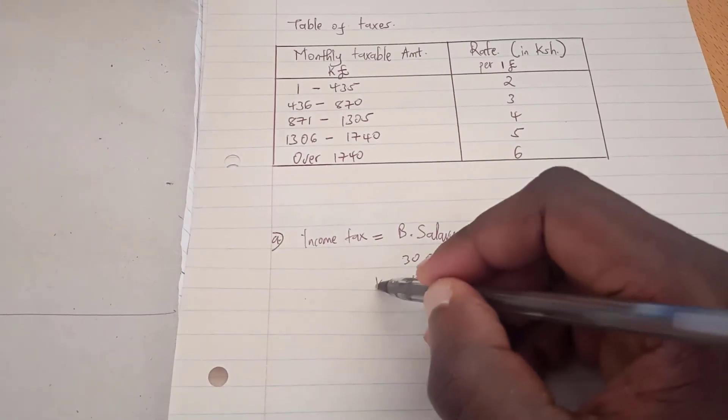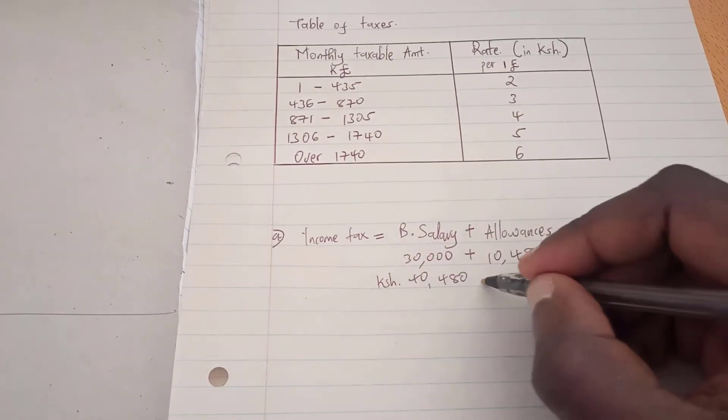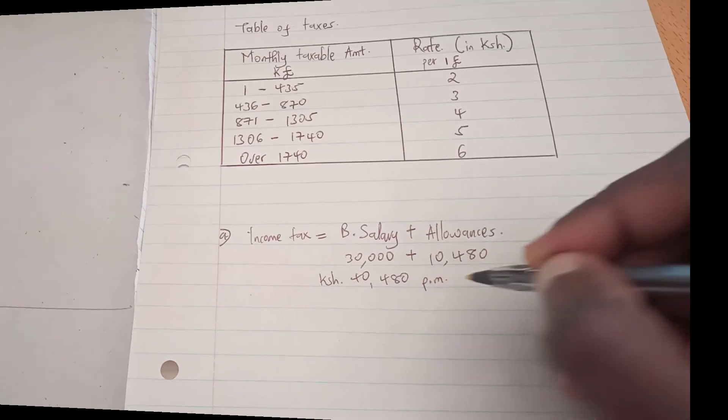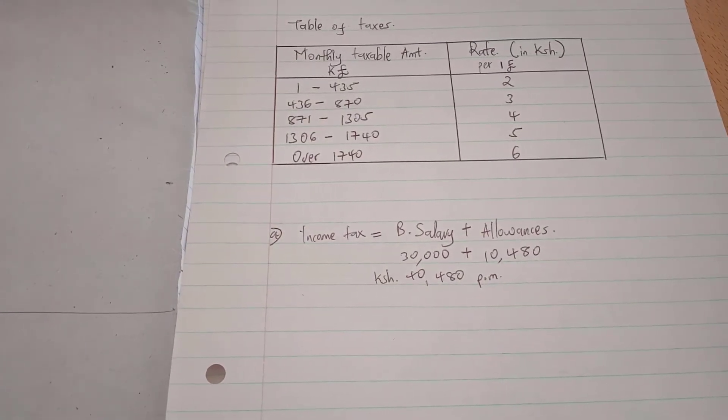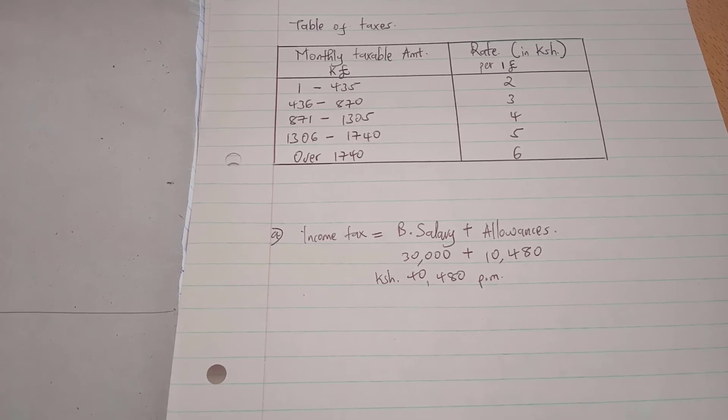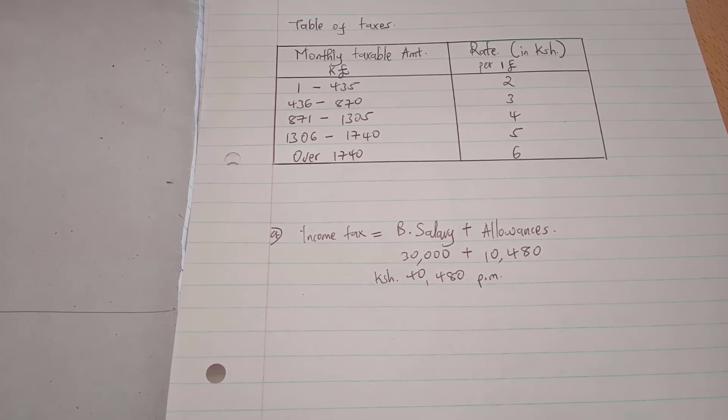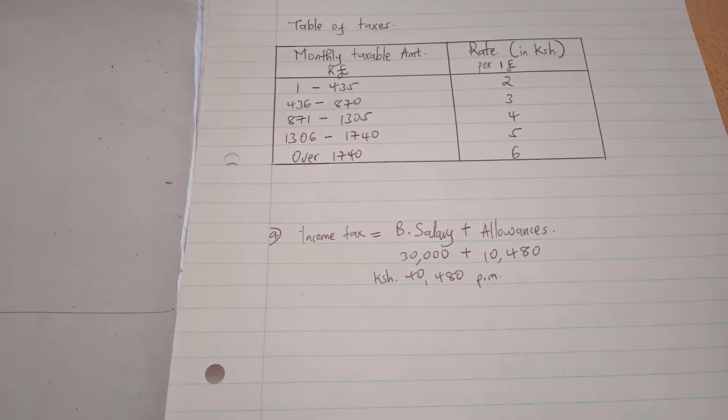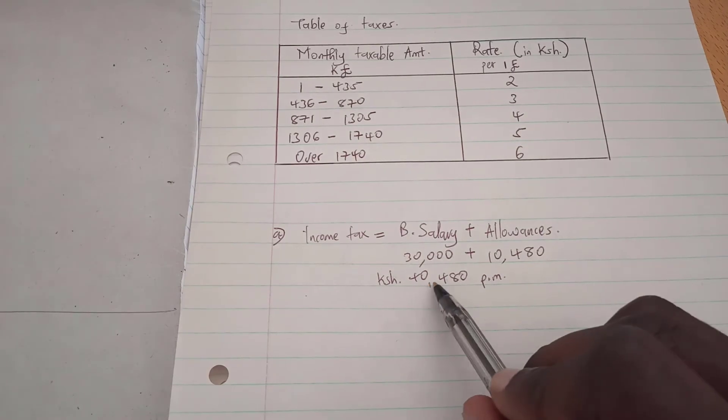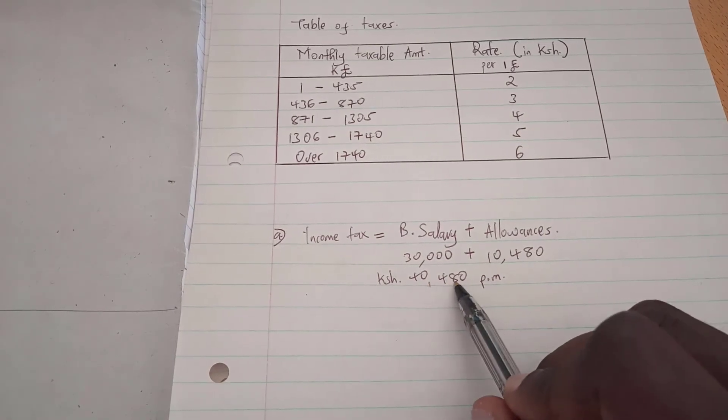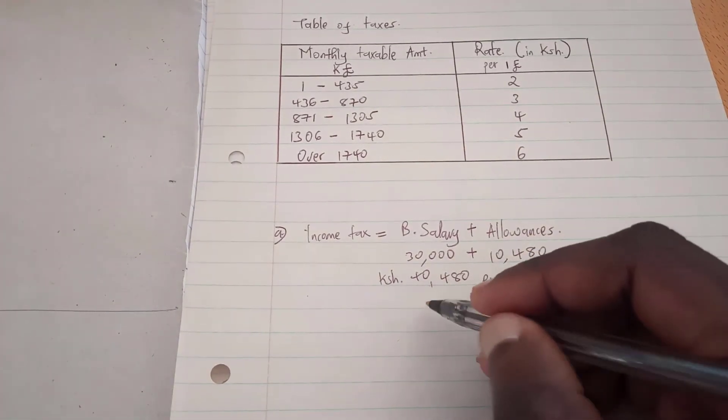Now remember, we have to convert these Kenyan shillings into Kenyan pounds because the question was very specific: calculate the total income tax in Kenyan pounds. Therefore, in order to convert this into Kenyan pounds per month, we'll have to take this 40,480 Kenyan shillings and divide by one pound which is equivalent to 20 shillings.